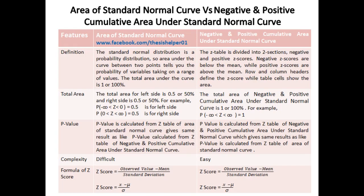The total area for the left side is 0.5 or 50% and the right side is also 0.5 or 50%. For example, the probability of Z between negative infinity and 0 equals 0.5 or 50% for the left side, and 0.5 or 50% for the right side. The total area of the negative and positive cumulative area under the standard normal curve is 1 or 100%.